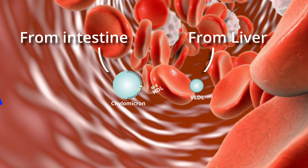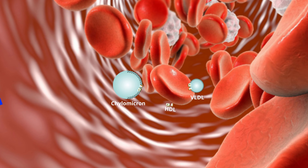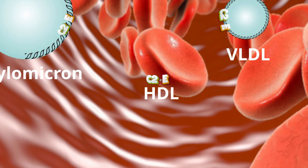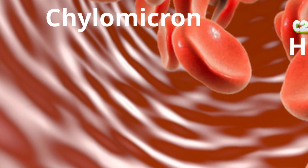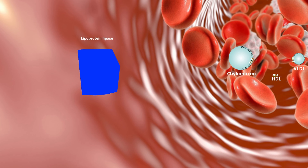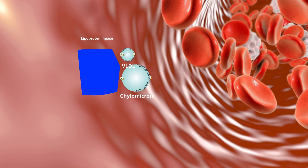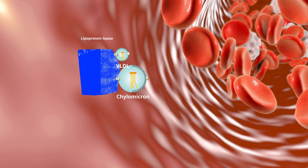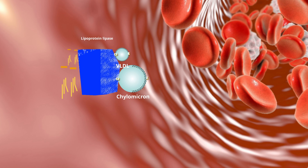Chylomicrons and VLDL take up ApoC2 and ApoE from HDL. Lipoprotein lipase, present in the capillary walls of adipose, muscle, and other tissues, is activated by ApoC2 and hydrolyzes a portion of triglycerides in chylomicrons and VLDL, converting them to chylomicron remnants and IDL, respectively.